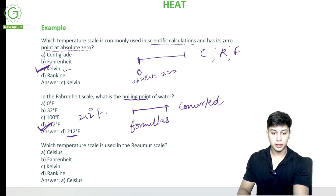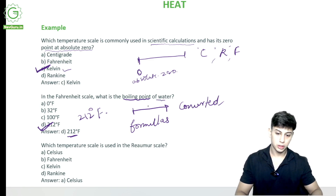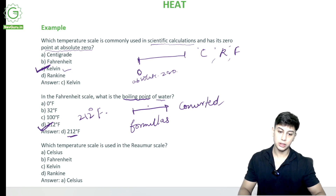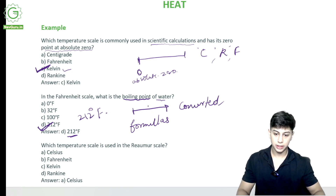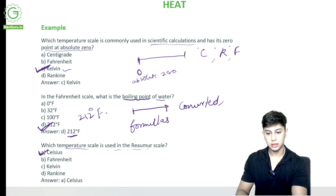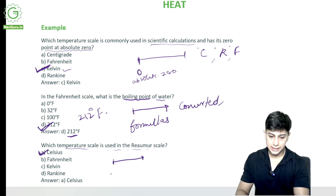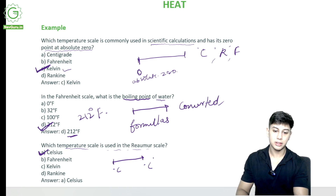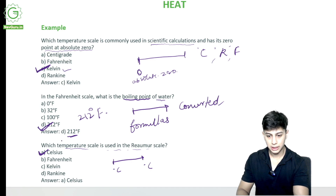Which temperature scale is used in the Réaumur scale? It is Celsius. In the Réaumur scale as well, we use Celsius — degree Celsius. It was the Réaumur scale but the values will be different. So which temperature scale is used in the Réaumur scale? Celsius.